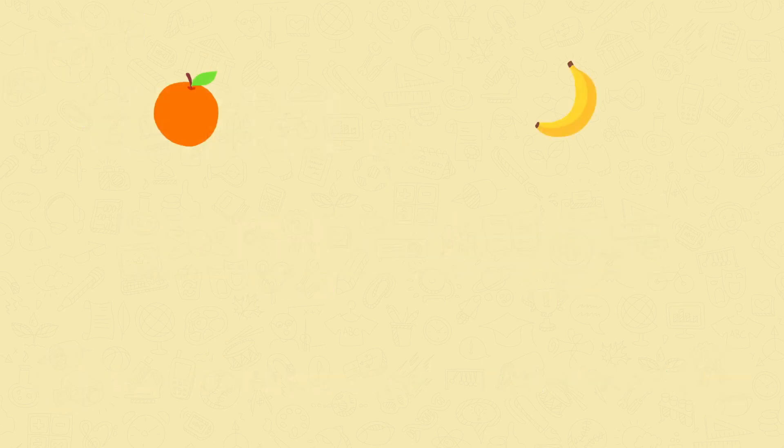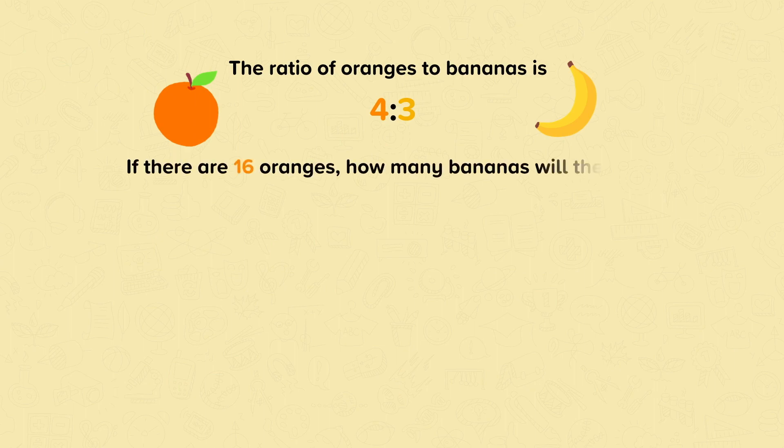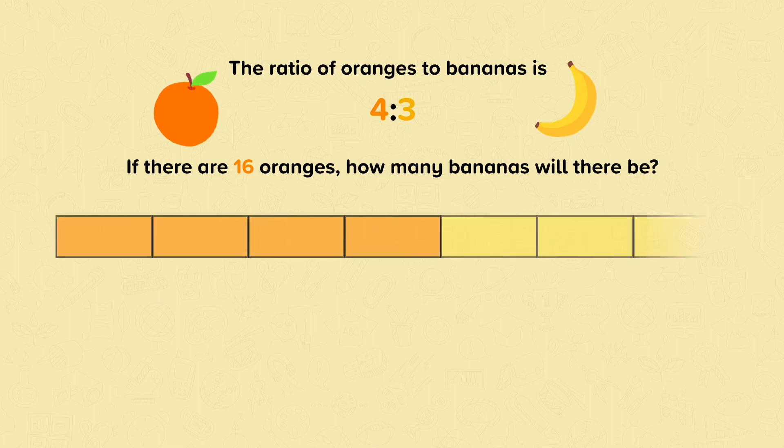The ratio of oranges to bananas is 4 to 3. If there are 16 oranges, how many bananas will there be? The ratio is 4 to 3, so the total number of parts is 4 plus 3 equals 7.